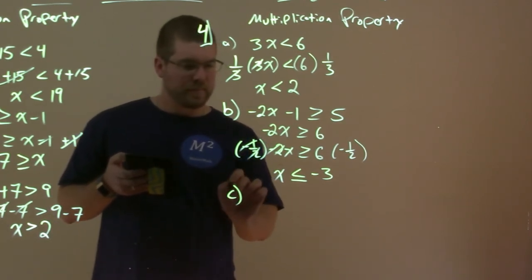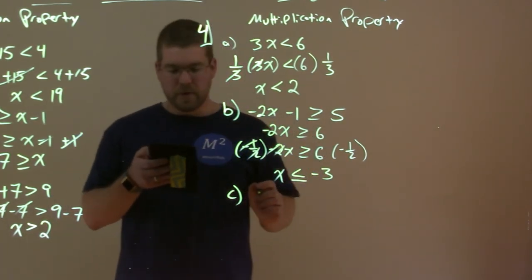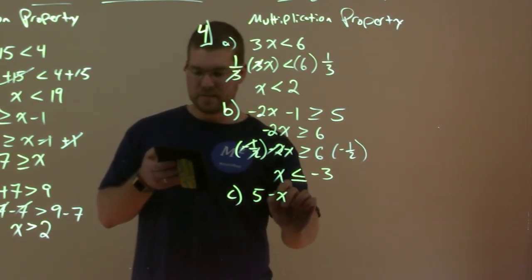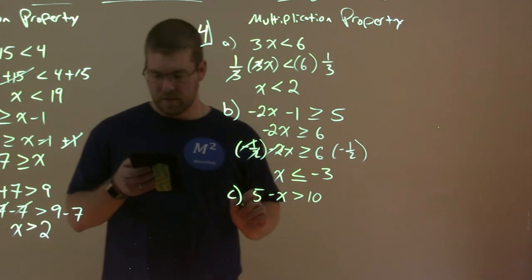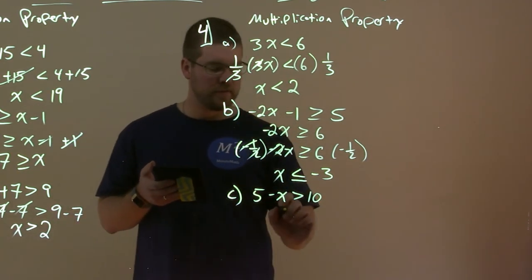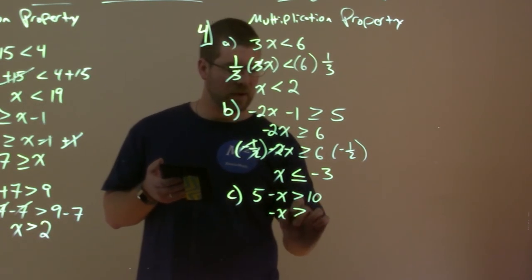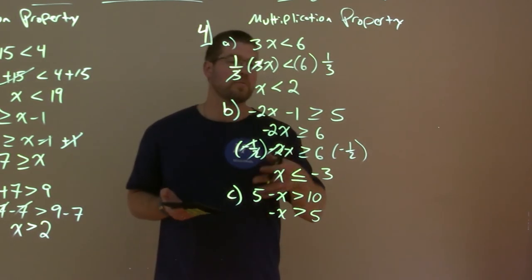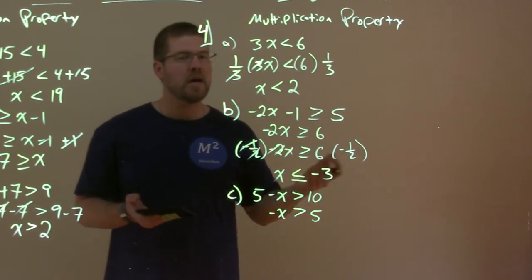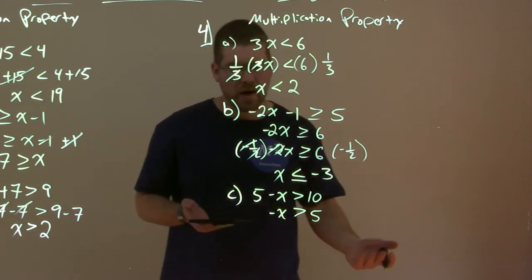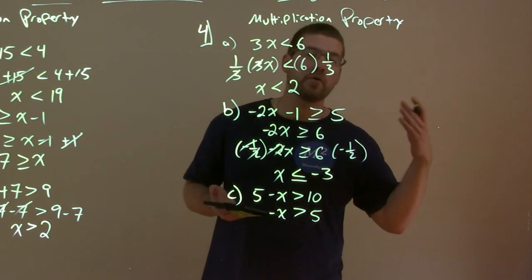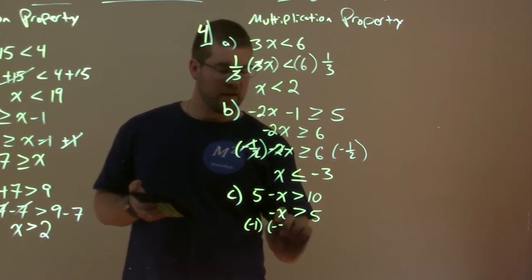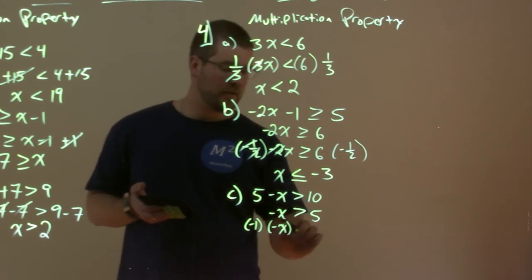And lastly, part C, we have 5 minus X is greater than 10. And we're going to go through the same process here. Subtract the 5 from both sides. We have minus X is greater than 10 minus 5, which is positive 5. Notice again, if we subtract the 5 over the inequality, nothing changes. And it's only when we multiply or divide by a negative number over the inequality. So here again, we're multiplying by negative 1 to get rid of that minus or the negative sign in front of the X.